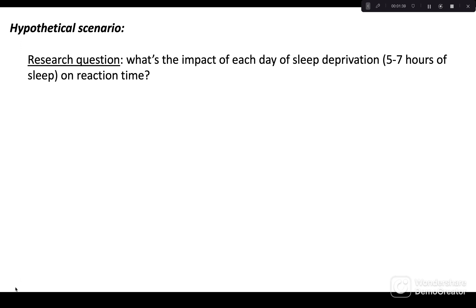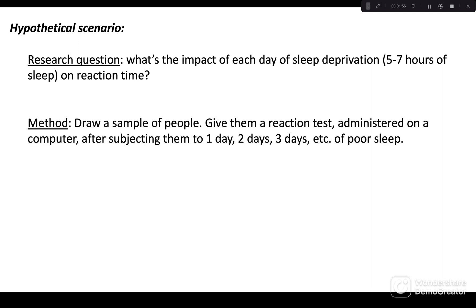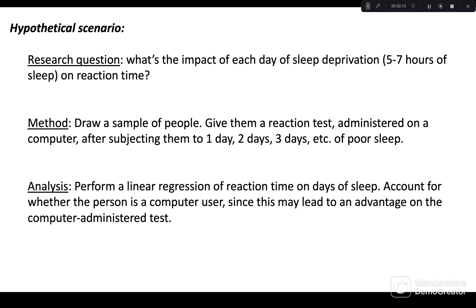The data we generate will be based on a hypothetical scenario. The research question is: what's the effect of each day of bad sleep on reaction time? We'll define sleep deprivation as five to seven hours, and normal sleep is seven to nine hours. The researchers draw a sample representing a broader population. They give those people a reaction test on a computer after one day of bad sleep, two days, and so on. So we have repeated measurements within subjects. We do a linear regression. The outcome is reaction delay. The predictor of interest is days of sleep. But we have a confounder, this covariate we want to account for, which is whether the person is a computer user, because the test is given on a computer. If you're good at computers, you would have an advantage potentially simply by being a computer user.